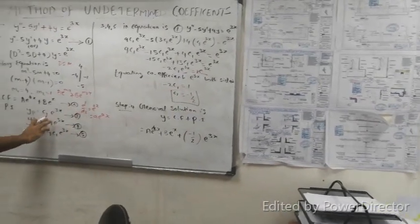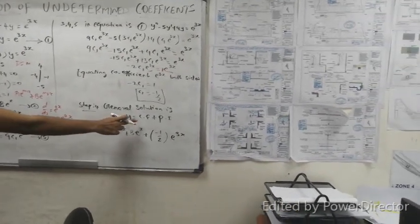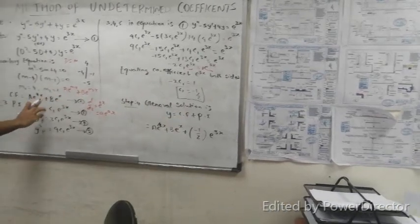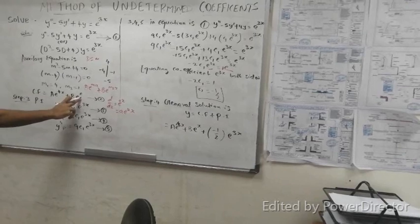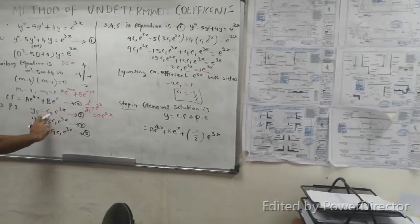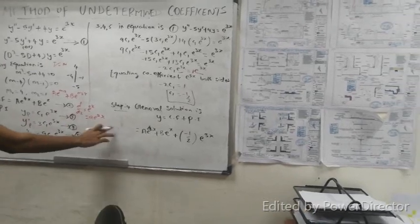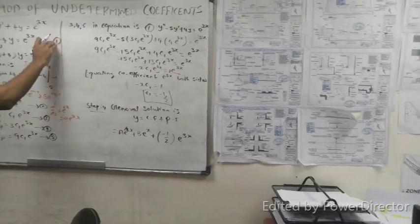Step 4: The general solution is y = complementary function plus particular solution. So y = A e^(4x) + B e^x - (1/2) e^(3x).